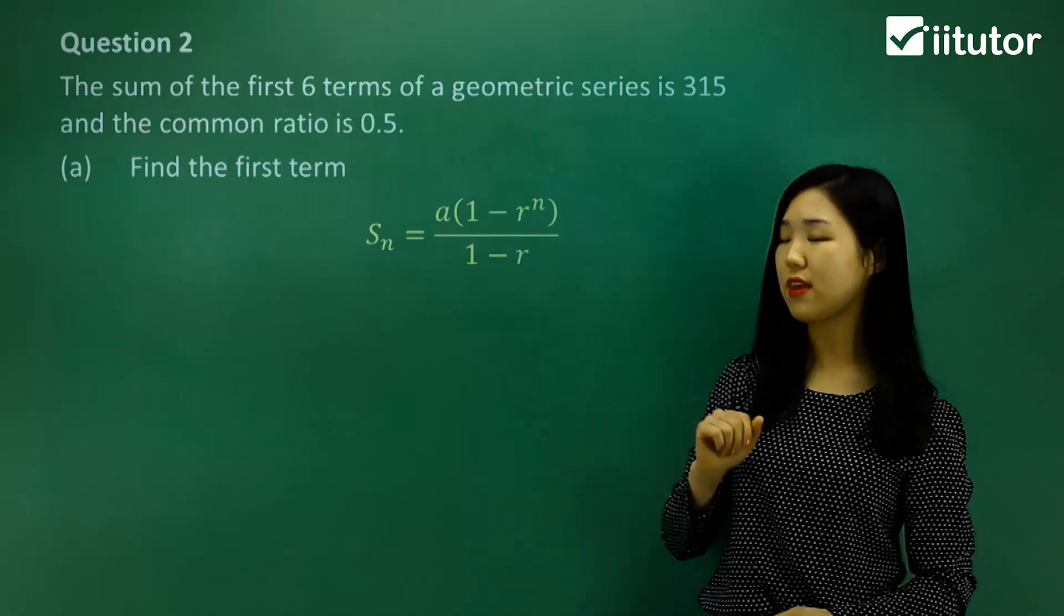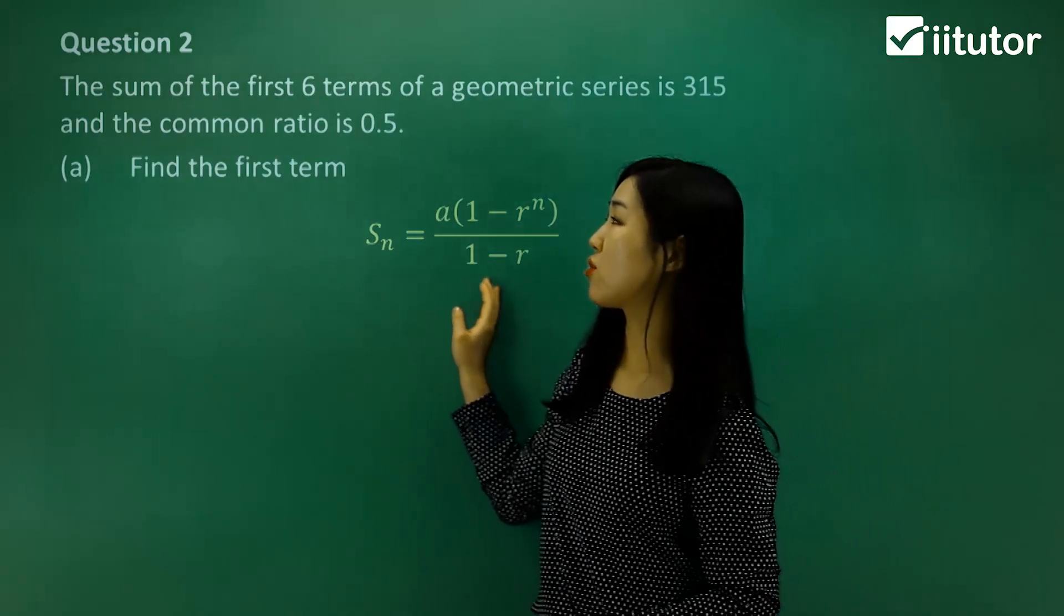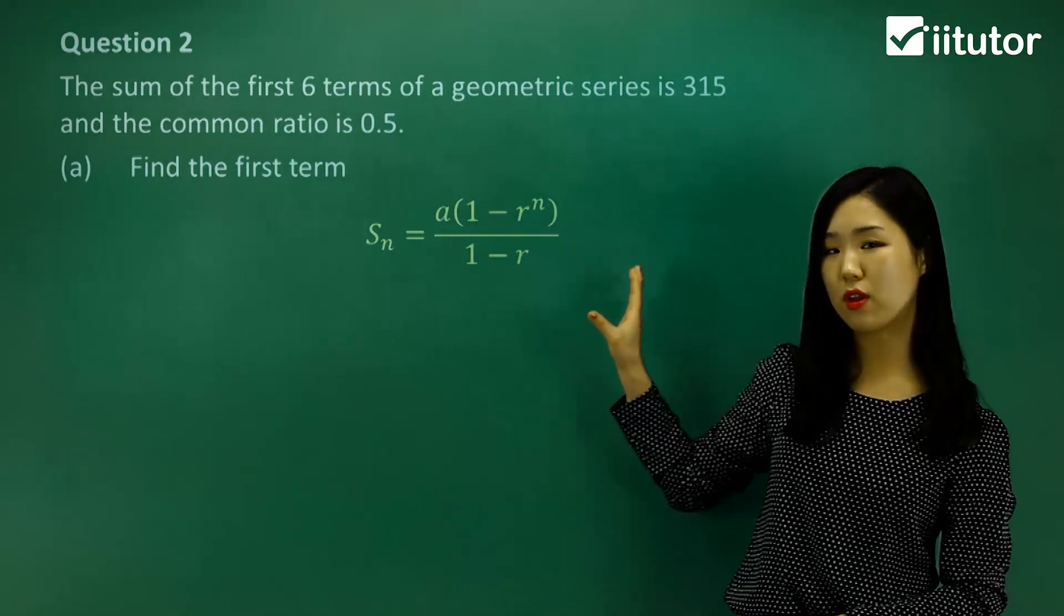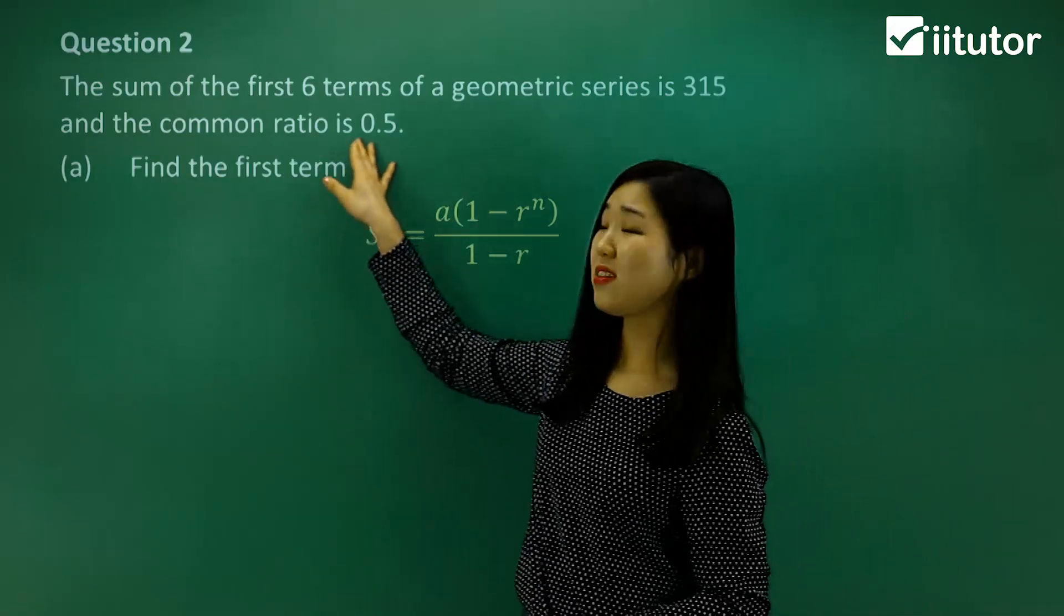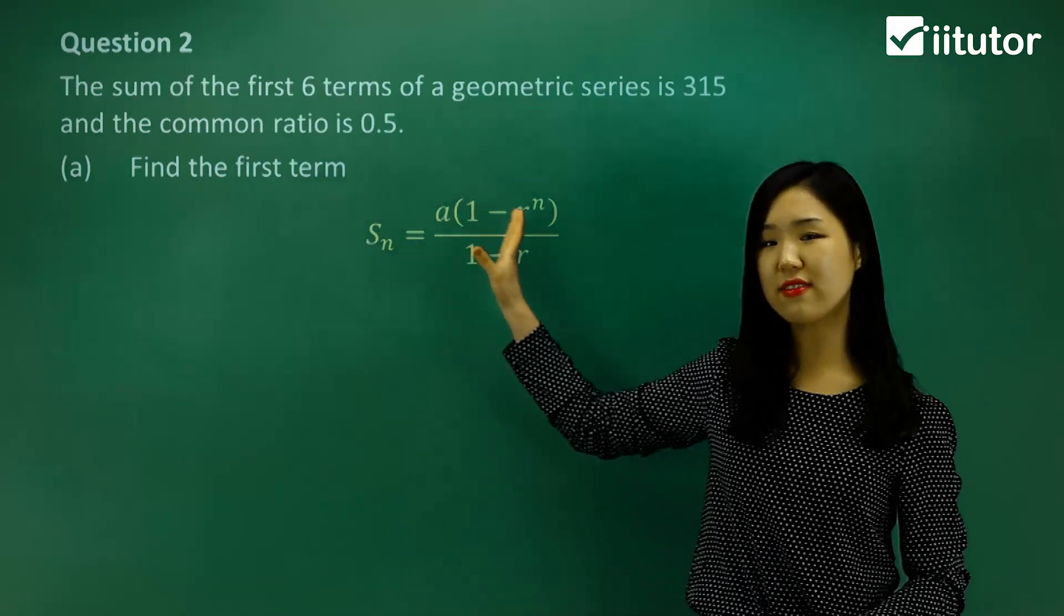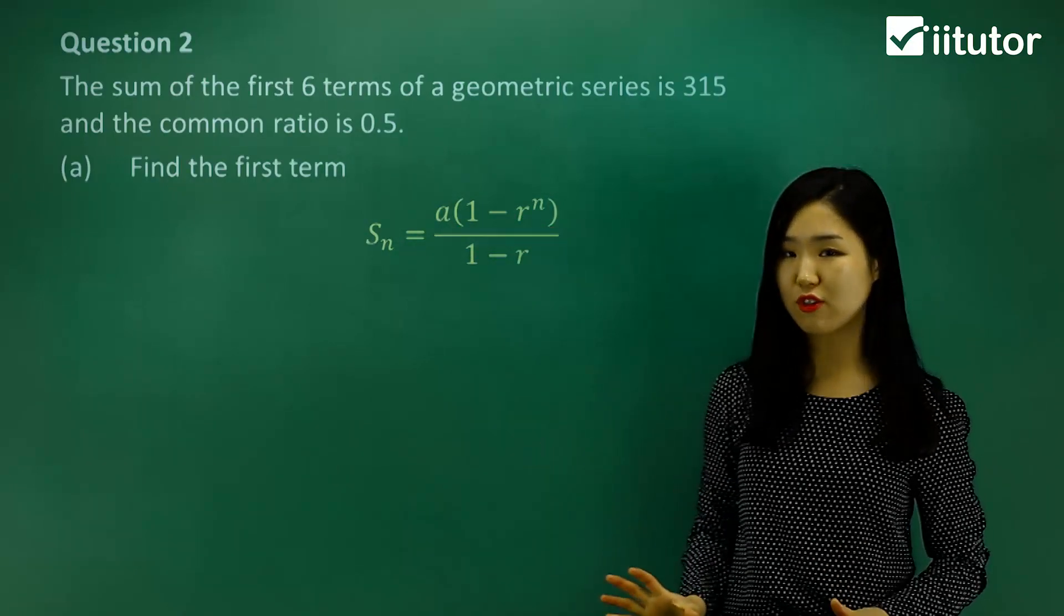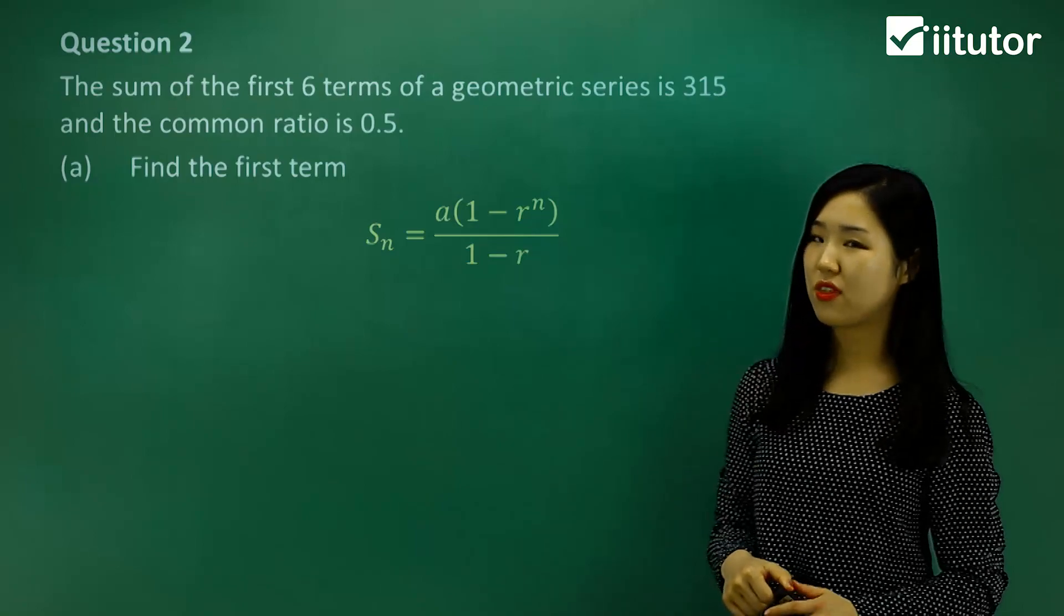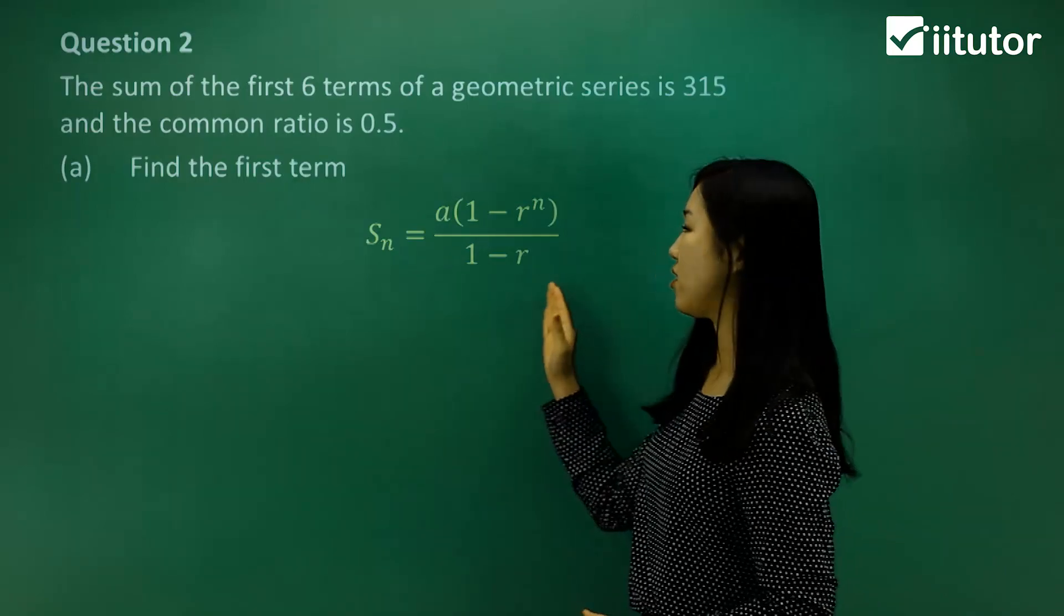So we'll use our sum formula. See how this time I'm actually using the one different to question 1. I'm using the 1 minus r to the power of n, so 1 minus r. I'm going to use this version of the series formula. And that's because the common ratio was less than 1 this time. So if it's less than 1, I prefer you to use this one. It's just easier to solve during your algebra steps. So keep an eye on what the common ratio is. If it's greater than 1, you'd use the other one. If it's less than 1, you'd use this one.